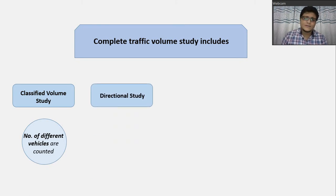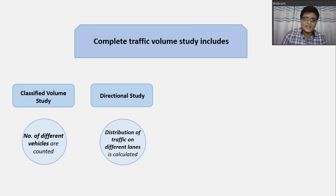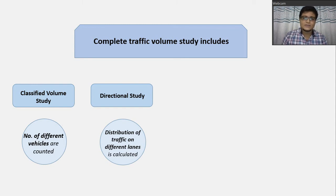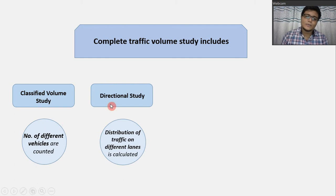There is another type of traffic volume study called the directional study. In the directional study, the distribution of traffic on different lanes is calculated. For example, we need to know how many cars are coming in one direction and in the opposite lane how many cars are passing. For that purpose, we perform the directional traffic volume study.